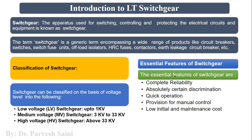Any switchgear should possess certain features. It should be reliable, because it is a protecting device which protects the circuit from any kind of transient, overvoltage, or overcurrent in the main supply. It is similar to a fuse — when the current exceeds the prescribed limit, because of the I²R effect, the wire inside the fuse melts down because its melting point is reached due to the heat generated by the excessive current.